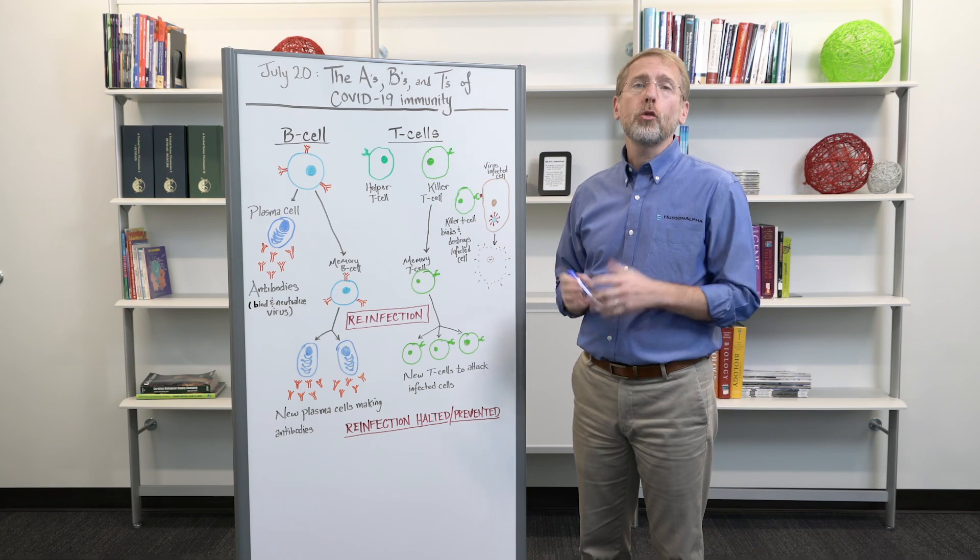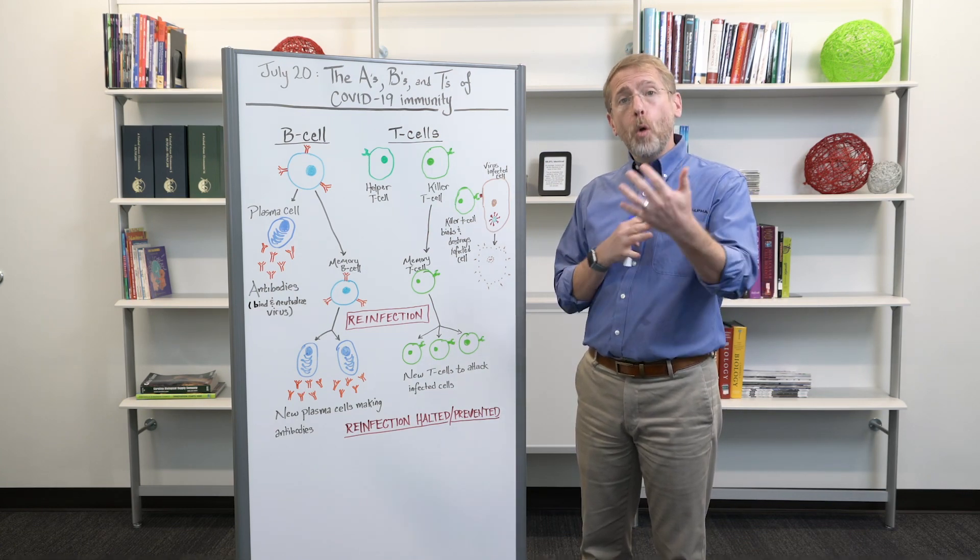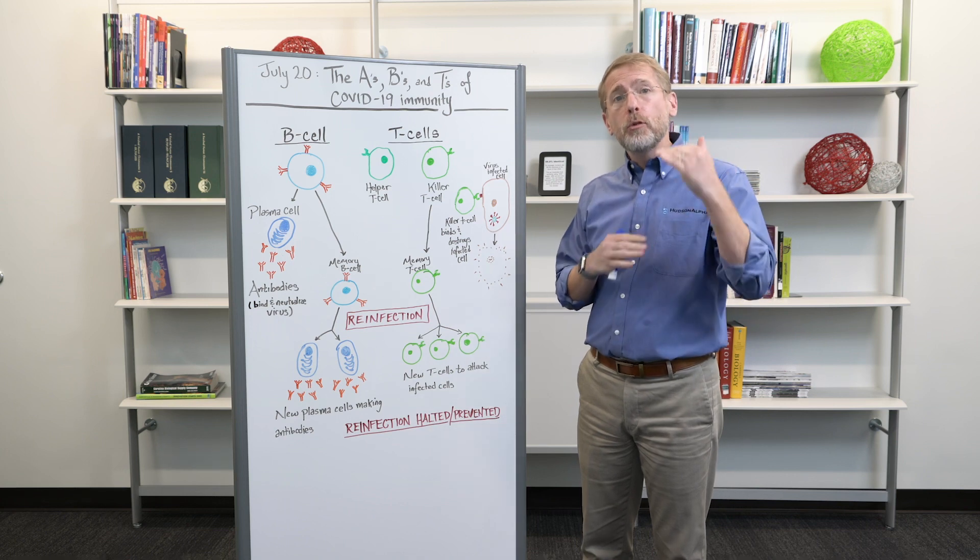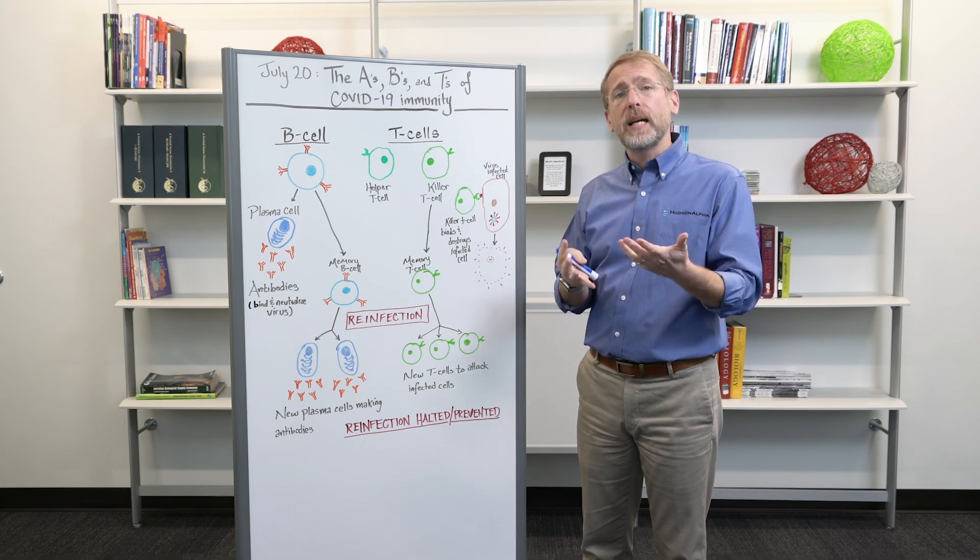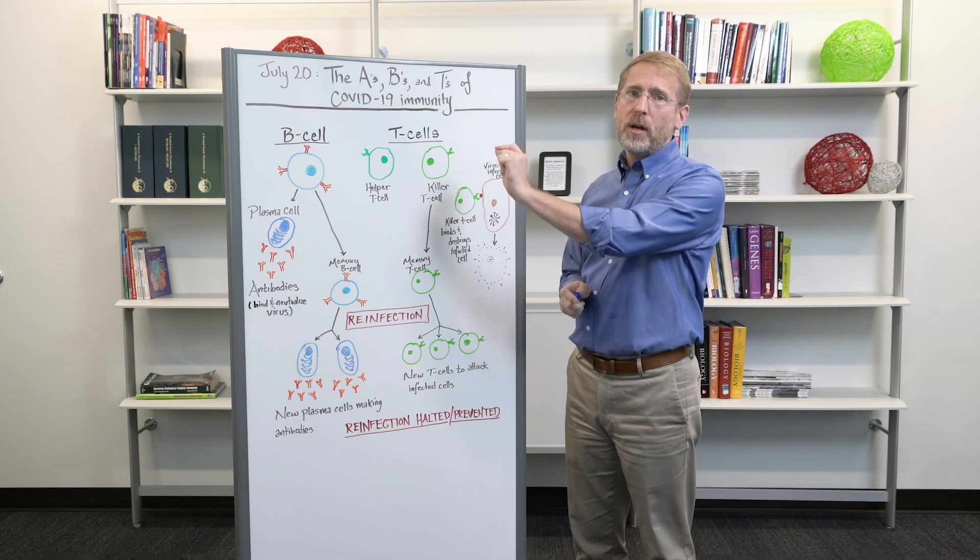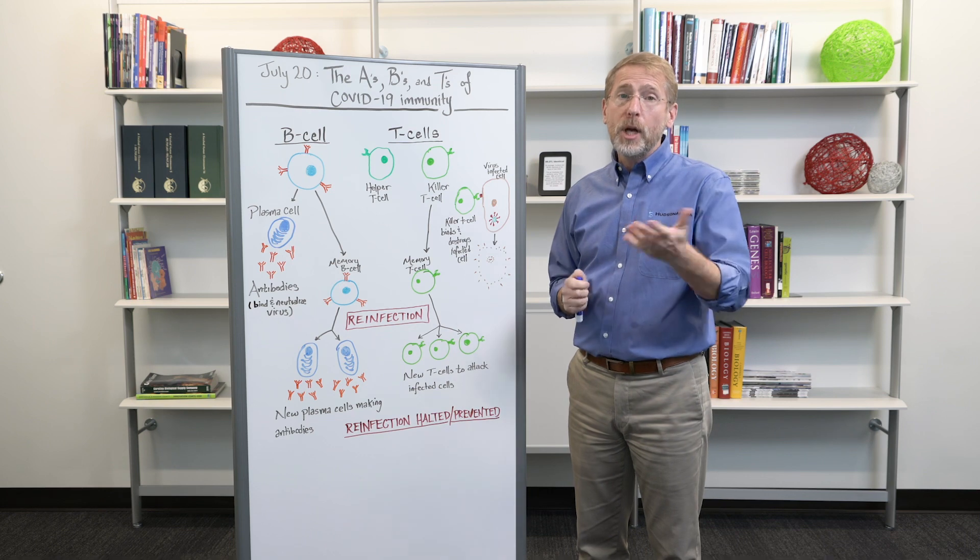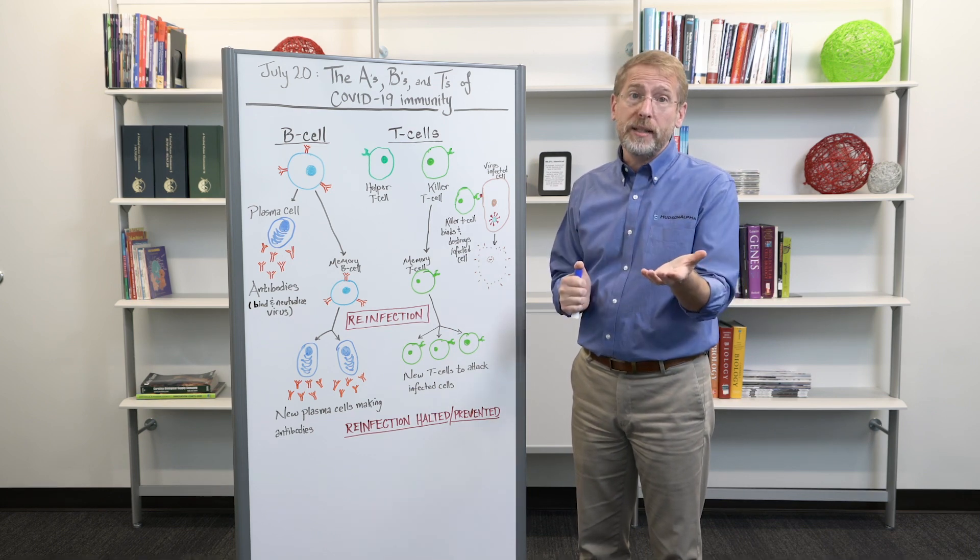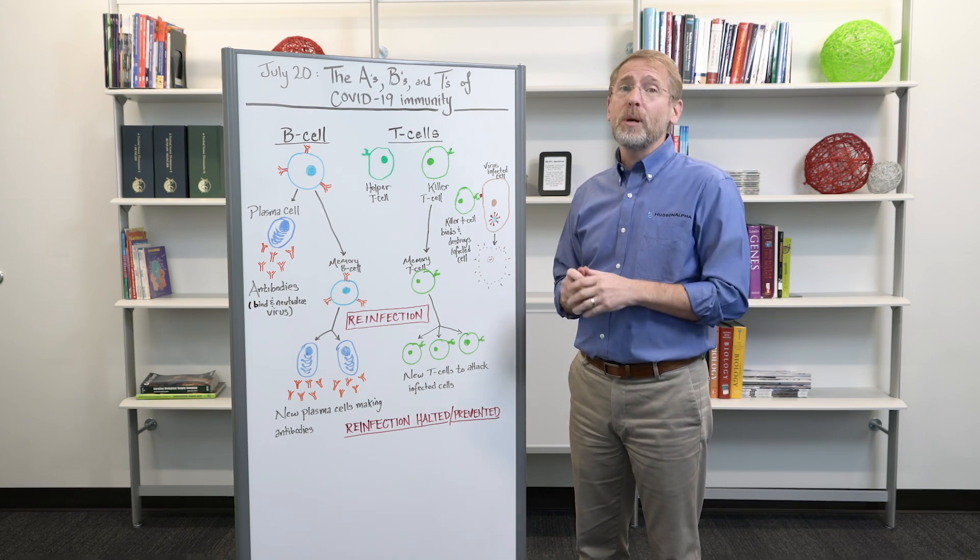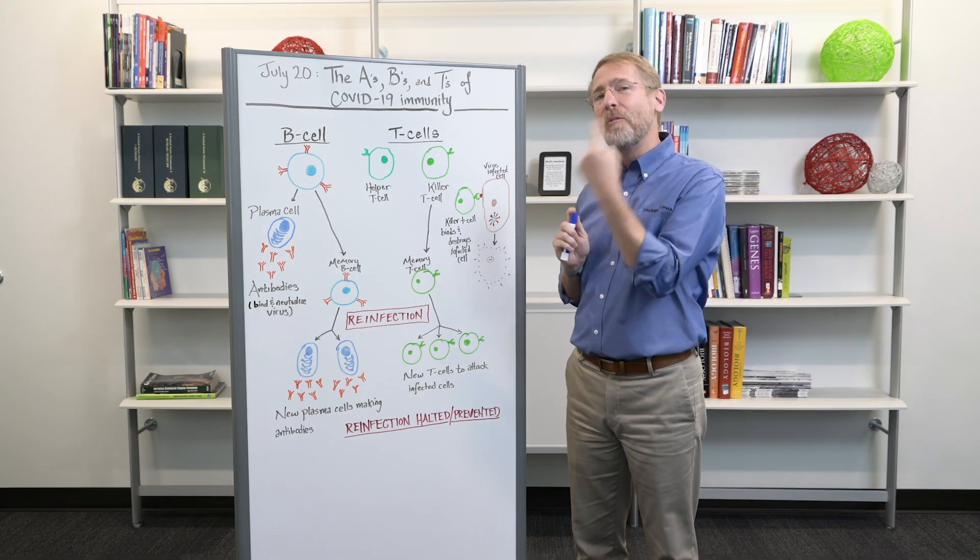The immune system is incredibly complex, beautifully complex. There are multiple layers of immune response that help protect us against foreign invaders. I'm just going to skim across the surface and touch on just a handful of pieces. So for any immunologists that are watching, I apologize in advance. Hopefully I don't make you grimace too much. For the rest of us, there are some key points that I want to get across.